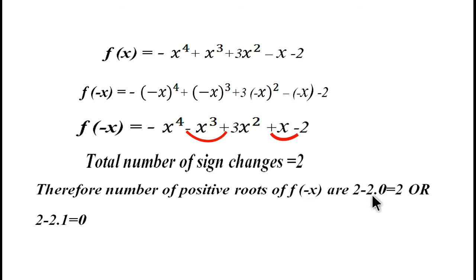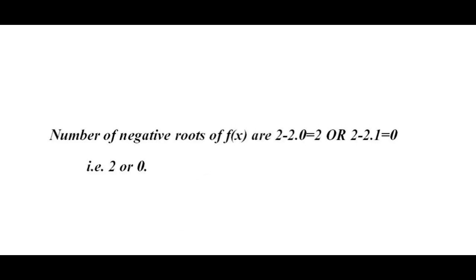From the third to the fourth term the sign does not change, and from the fourth to the fifth the sign changes. So there are again two sign changes in f(-x). Therefore, the total number of positive roots of f(-x) are 2 - 2×0 = 2, or 2 - 2×1 = 0. Using the relation above, the number of negative roots of f(x) is either 2 or 0.